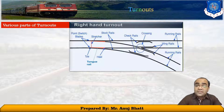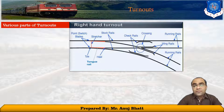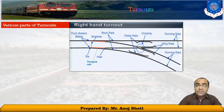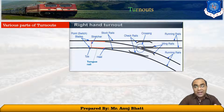The direction is the trailing direction if the vehicle has to negotiate a switch in the trailing direction. When standing at the toe of a switch, if one looks in the direction of the crossing, it is called the facing direction. The opposite direction is known as the trailing direction.